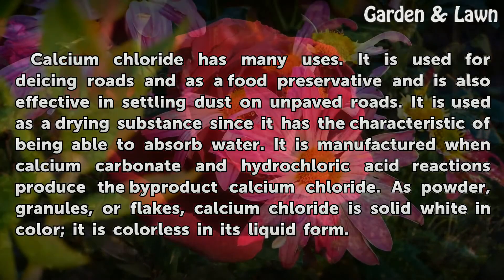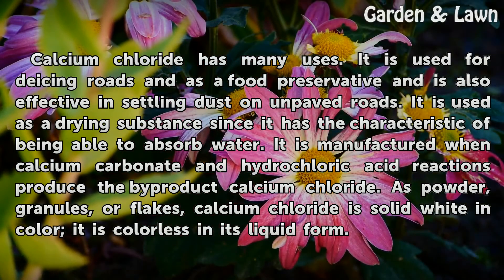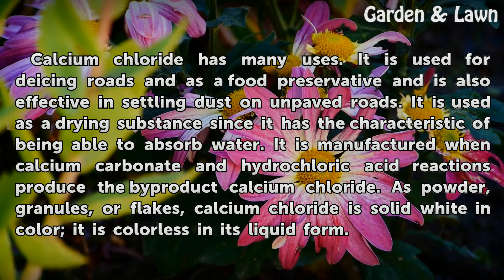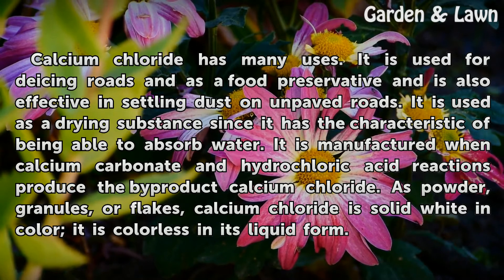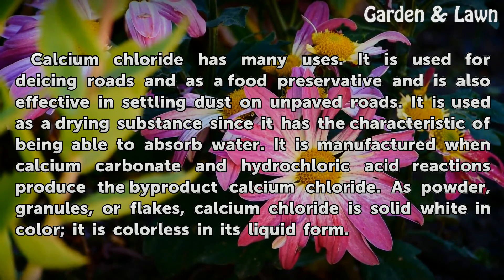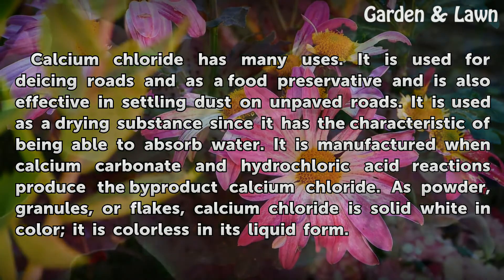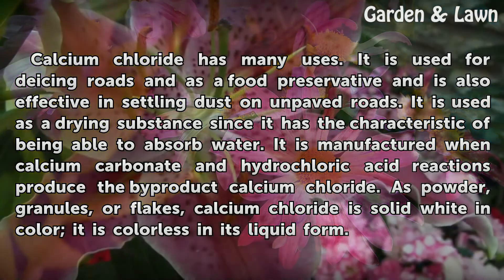Calcium chloride has many uses. It is used for de-icing roads and as a food preservative, and is also effective in settling dust on unpaved roads. It is used as a drying substance since it has the characteristic of being able to absorb water. It is manufactured when calcium carbonate and hydrochloric acid reactions produce the byproduct calcium chloride.